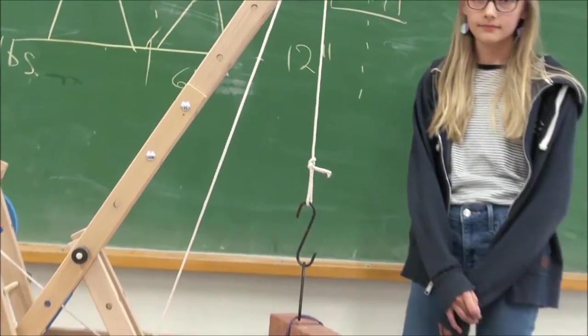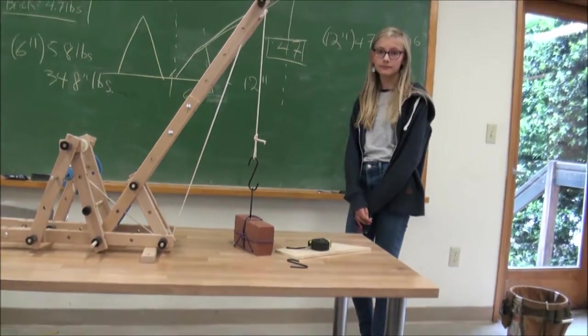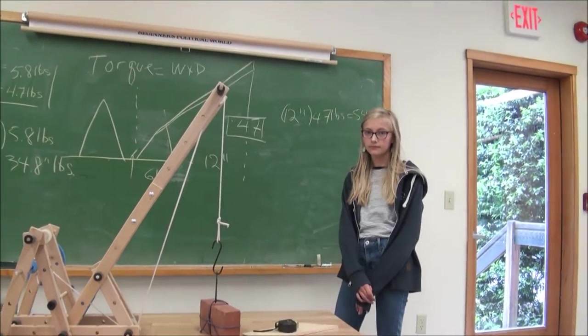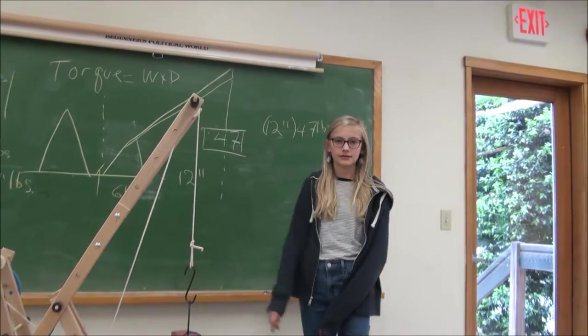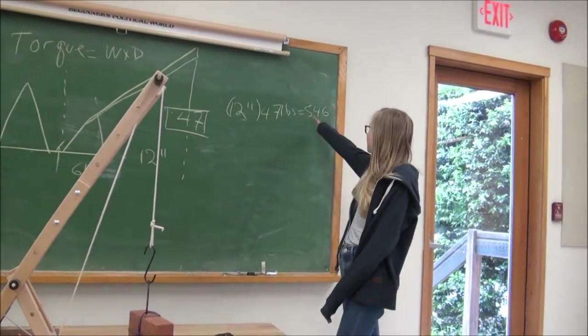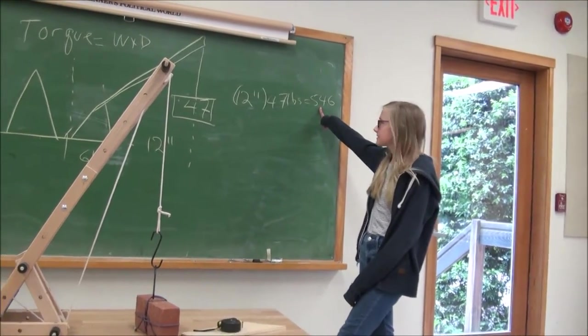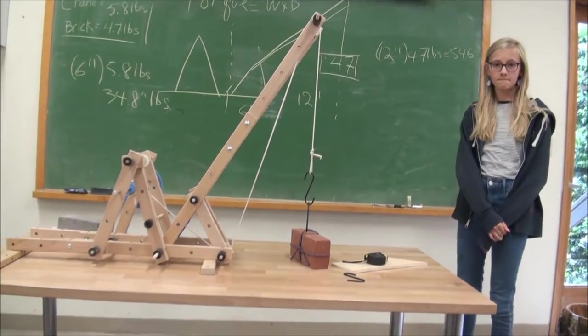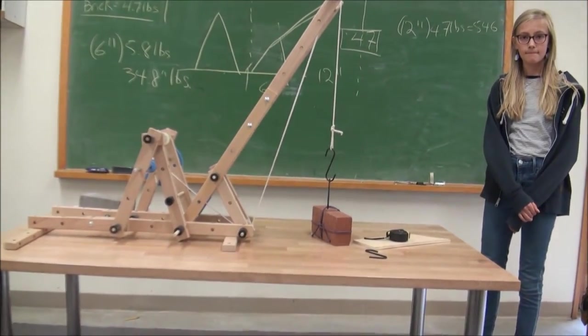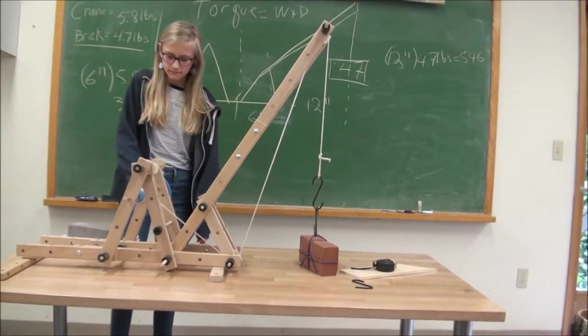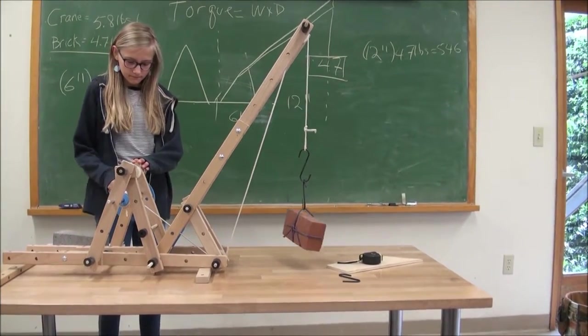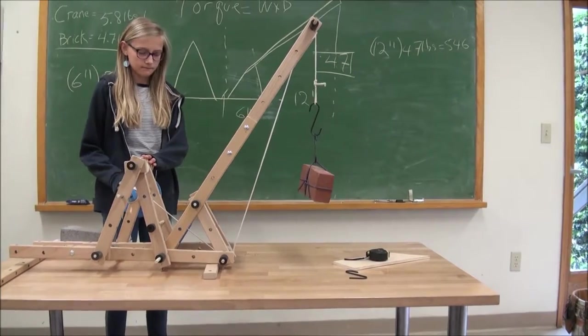On the other side we have the brick hanging from the boom and the brick weighs 4.7 pounds. The distance is 12 inches. So that gives us 54.6 inch pounds. So when we lift up that brick, let's see what happens.